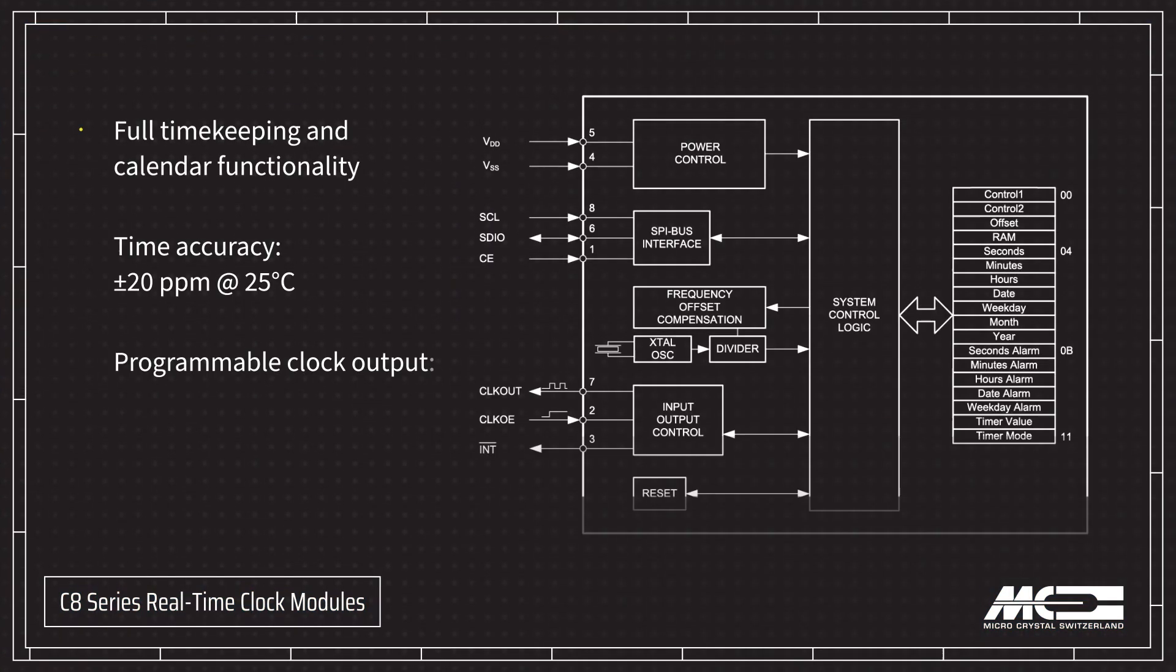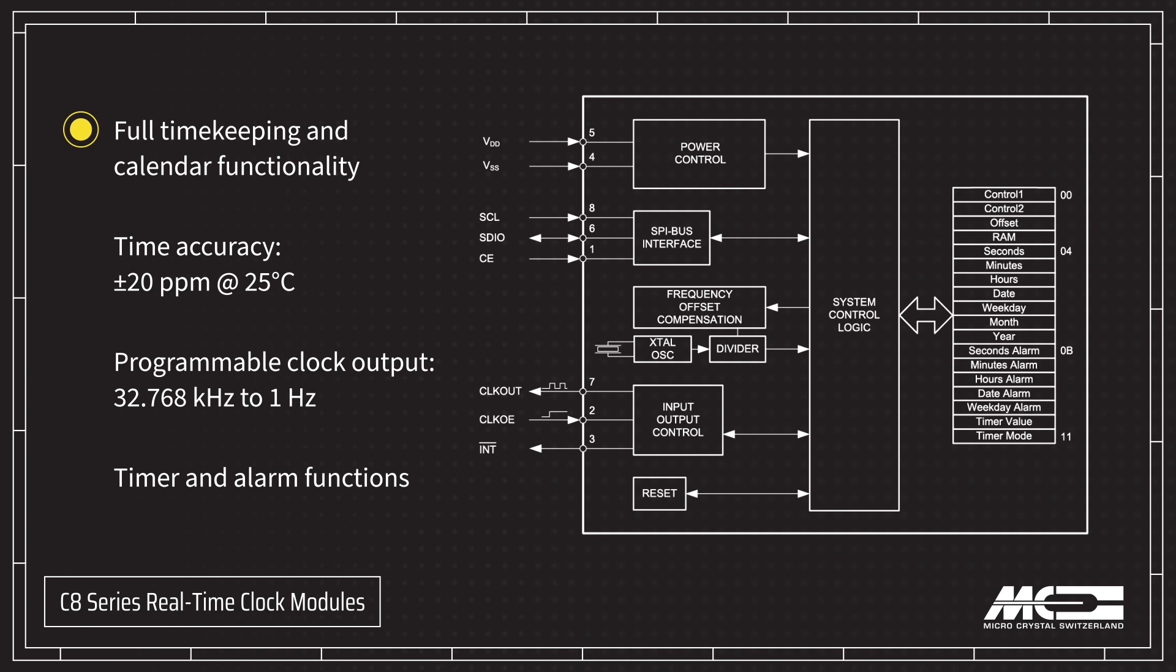The modules provide full timekeeping and calendar functionality from seconds to years, with a plus or minus 20 ppm accuracy and a user-programmable offset. The clock output is programmable from 1Hz to 32.768kHz, and timer and alarm functions are available.